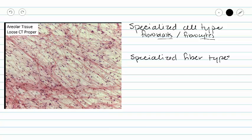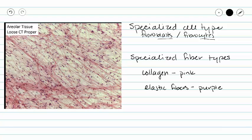We actually have two specialized fiber types. They include collagen — which is going to provide strength in one direction and appears pink — and elastic fibers, which are the purple fibers. We can see both of those in the slide: our collagen providing support in whatever direction it is facing, and our elastic fibers allowing for a little bit of stretch and recoil in this tissue.